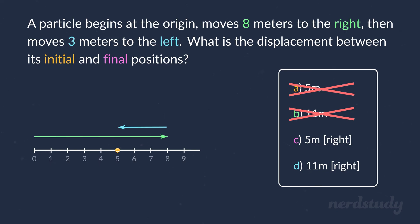So, how do we find the displacement? Well, first, we need to determine the initial and final position of the particle. That's easy. We know the particle started at the origin, which is zero, moved eight meters to the right and backtracked three meters,